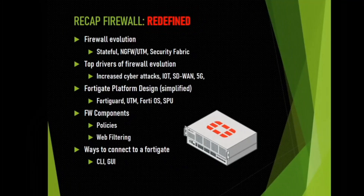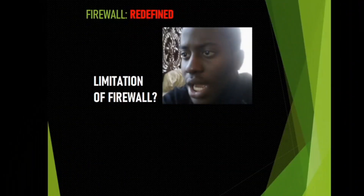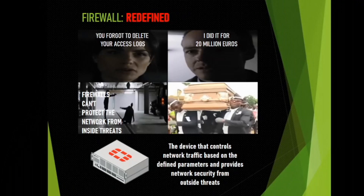Recapping our discussion: you've seen the evolution of the firewall and the top drivers of that evolution. We've seen the simplified platform design of FortiGate, discussed the basics of firewall components such as firewall policies and web filtering, and you've also seen how to access a FortiGate using the CLI and GUI for management purposes. Before we fully wrap up — what do you think is the possible weakness or limitation of a firewall? Well, a firewall can't protect the network from inside threats, whether intentional or not. So to sum up, a firewall is the device that controls network traffic based on defined parameters and provides network security from outside threats.